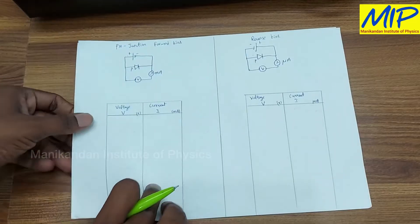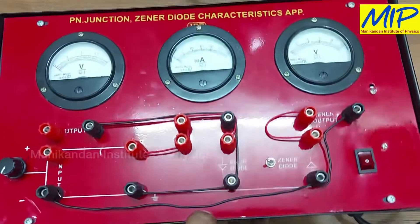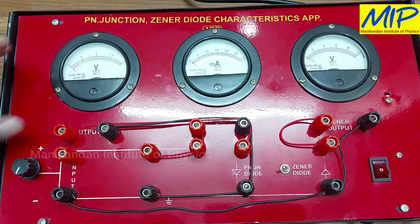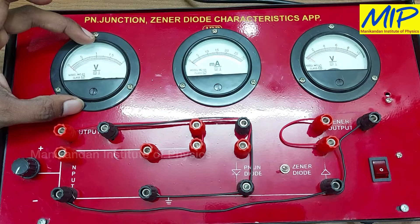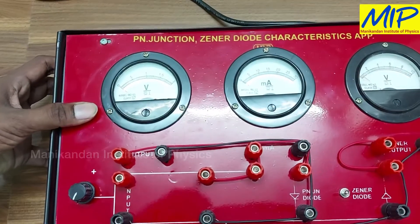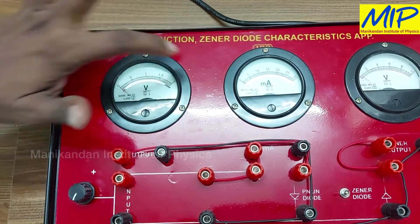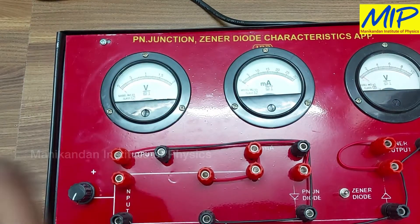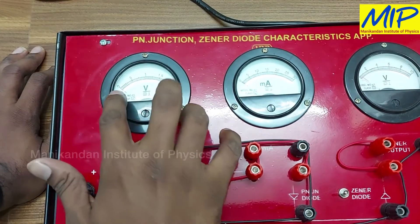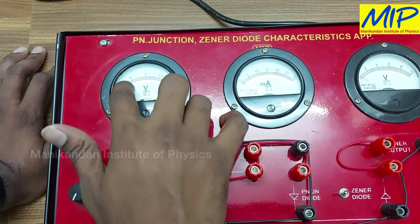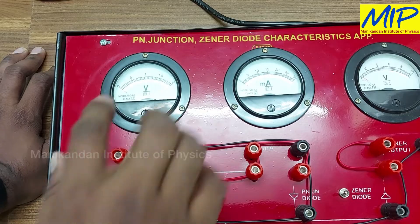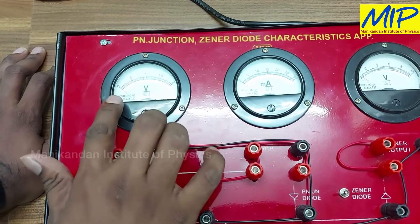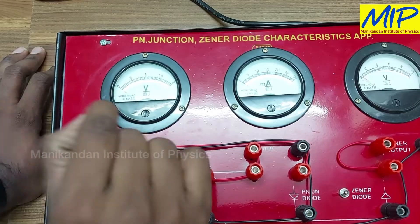Now I will explain the range and least count of the voltmeter and ammeter. This voltmeter is for forward bias — it has a range of 0 to 2 volts, so I can measure up to 2 volts. The number of divisions between 0 and 0.5 is 10, so 0.5 divided by 10 equals 0.05 volts. The least count of this voltmeter is 0.05 volts — each line on this voltmeter represents 0.05 volts.